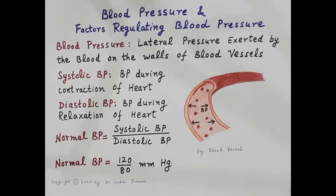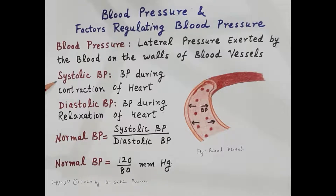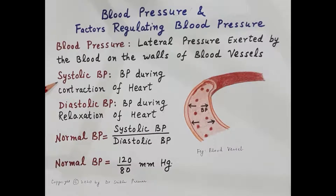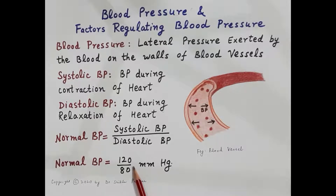There are two types of blood pressure: systolic blood pressure and diastolic blood pressure. Systole means contraction, so blood pressure during contraction of the heart is called systolic blood pressure. When the heart contracts, it pumps blood forcefully into the aorta and all other arteries. The pressure produced within the arterial system during contraction of the heart is high, and in a normal adult the systolic blood pressure is about 120 mm of mercury.